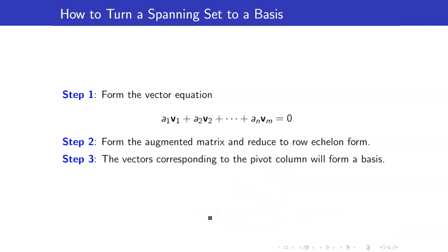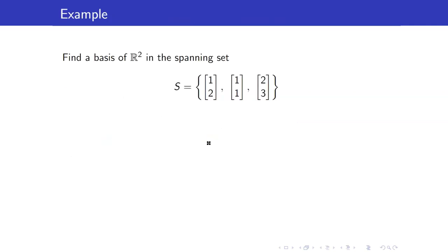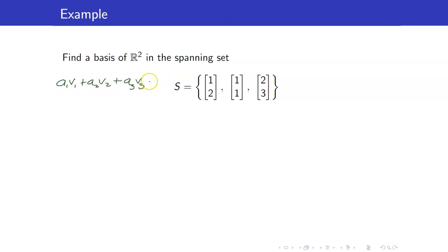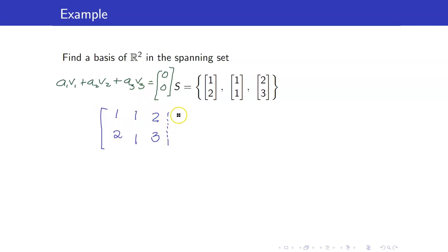To summarize: the vectors corresponding to the pivot columns will form a basis. To illustrate this, let us consider this set and solve it using the steps previously discussed. First, let us form the equation A1V1 + A2V2 + A3V3 = the zero vector. The zero vector in R2 is the column matrix (0, 0). The resulting augmented matrix from this system of linear equations has columns that are just the column vectors.